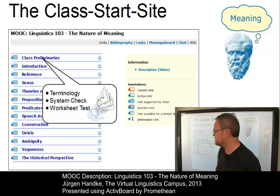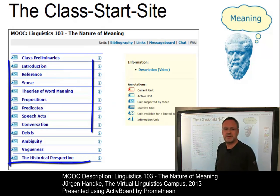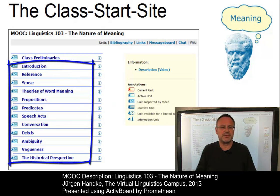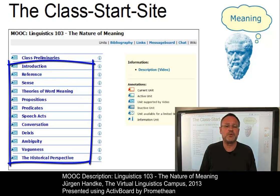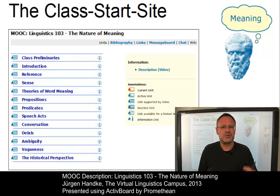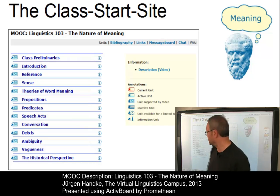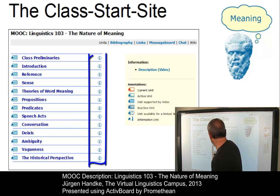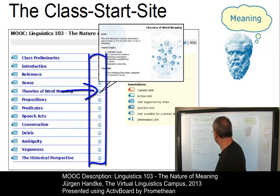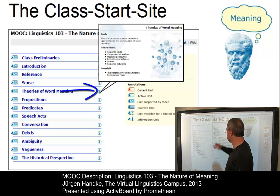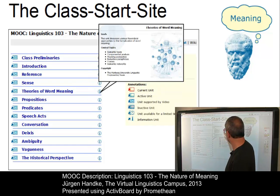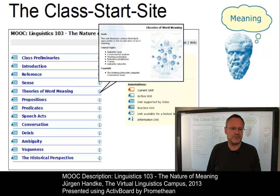The remaining units exhibit the content of this class. And if you wish, you can retrieve an overview of each unit by means of a click on one of the information symbols — for example, this one here, which is associated with the e-learning unit Theories of Word Meaning. And here in this little pop-up window, you see the details of that unit.